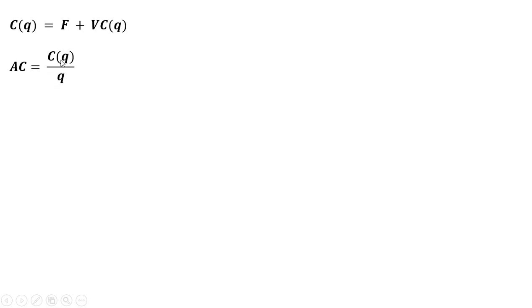Average cost, the cost per unit, is just total cost divided by Q.